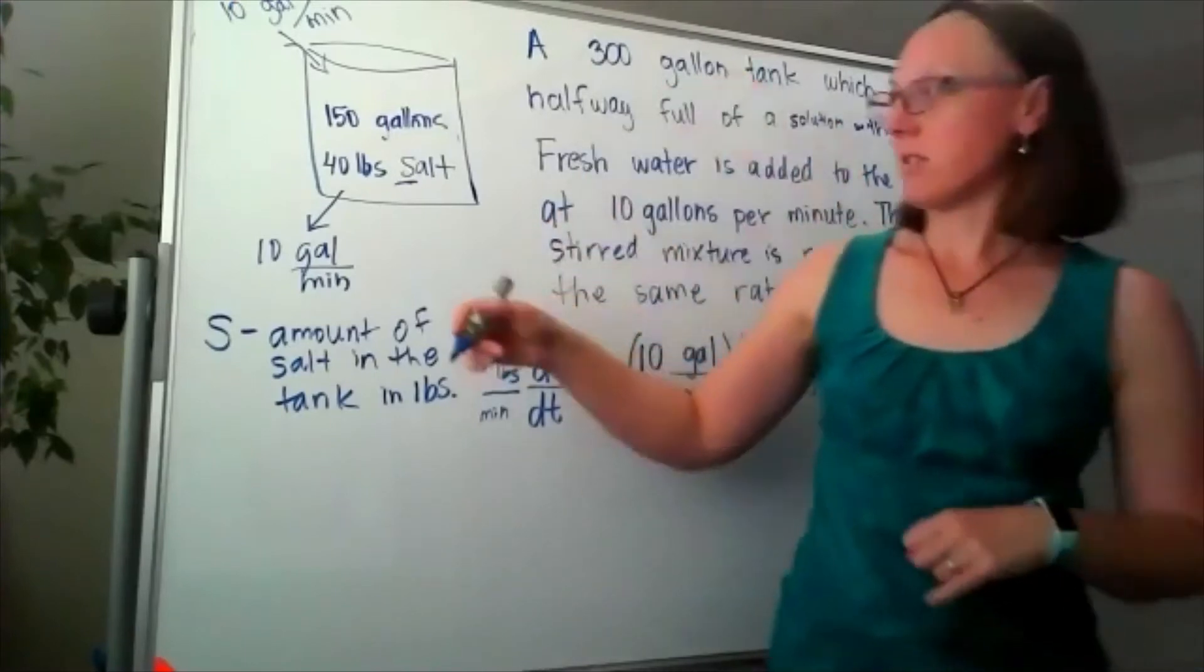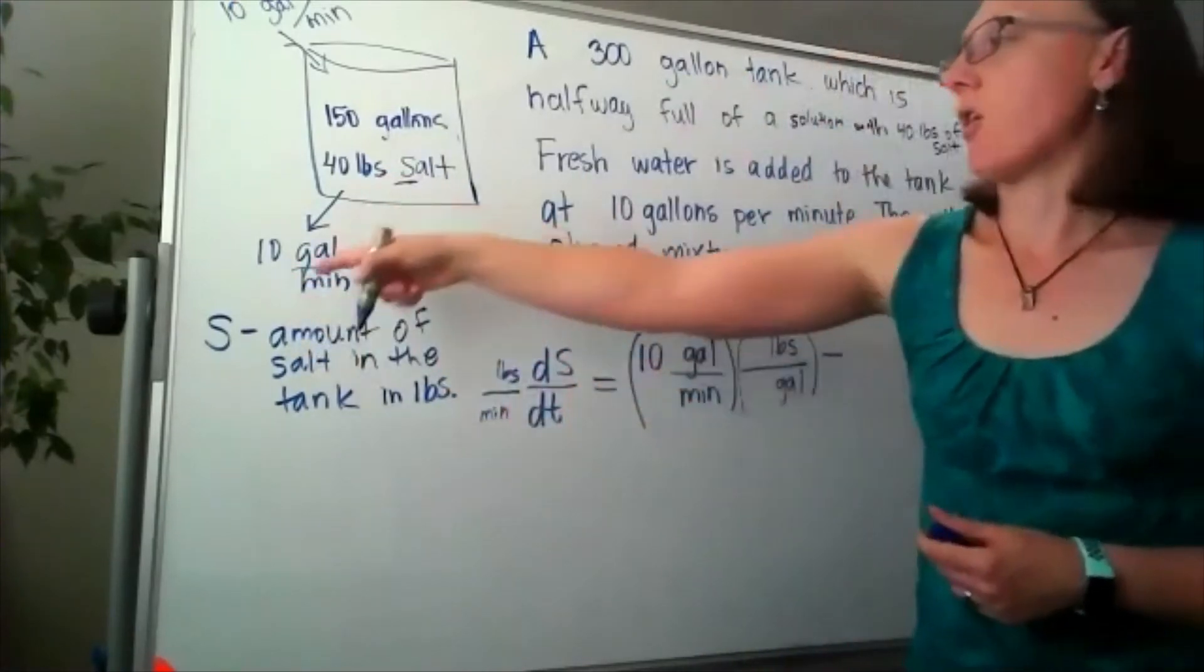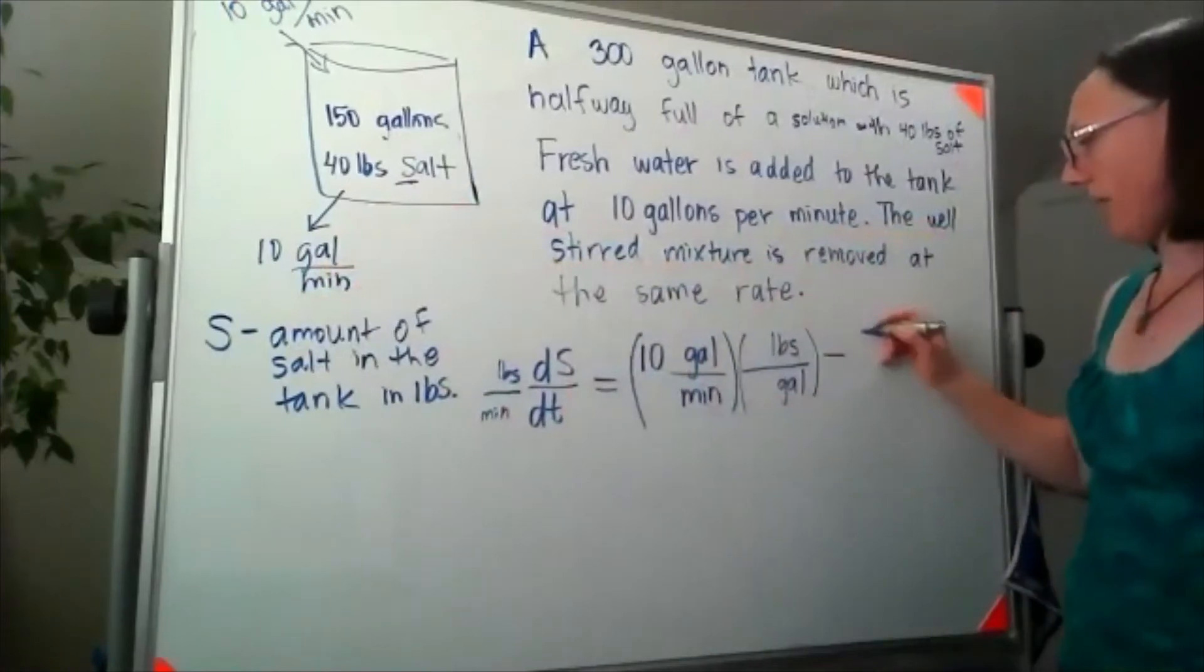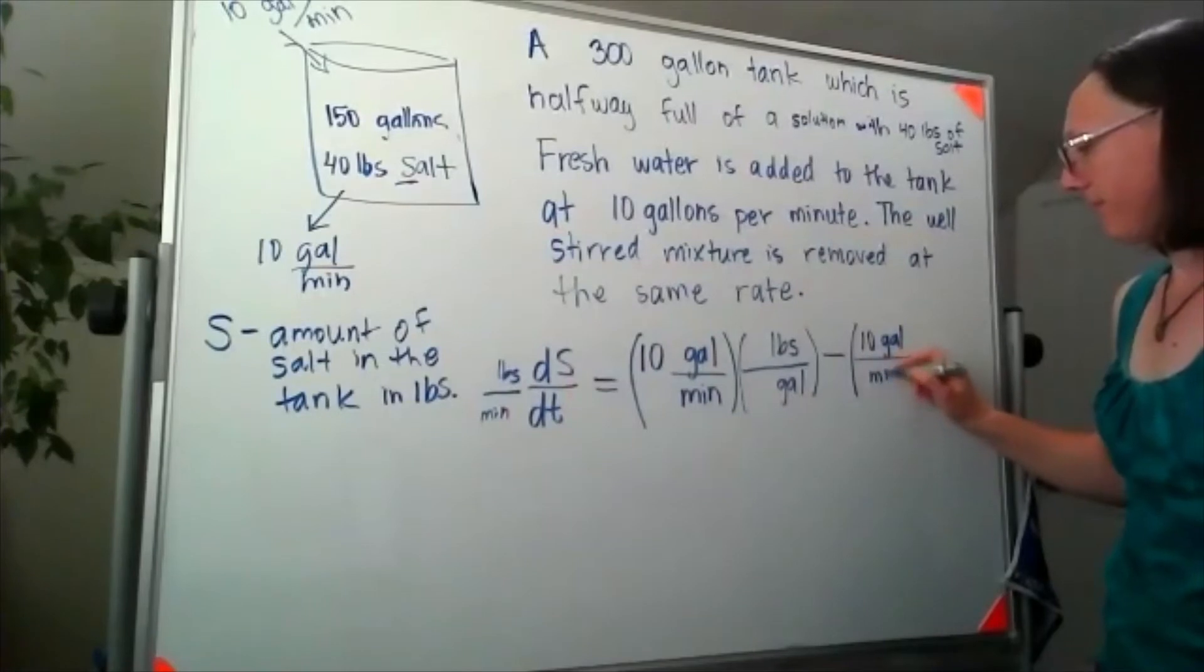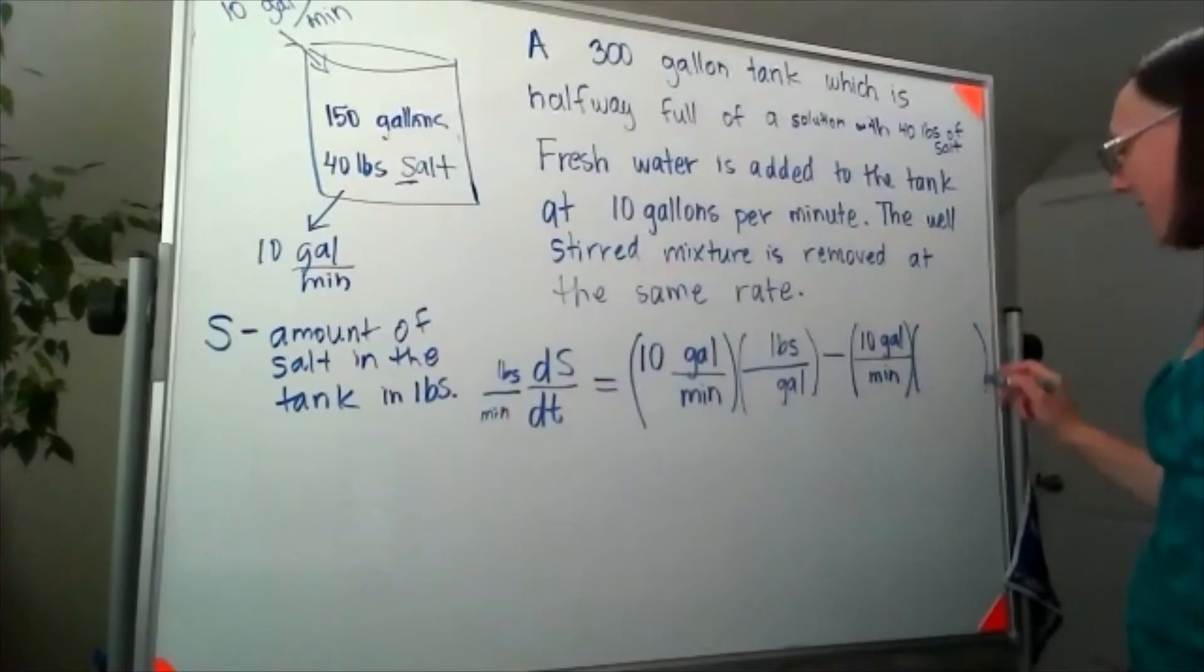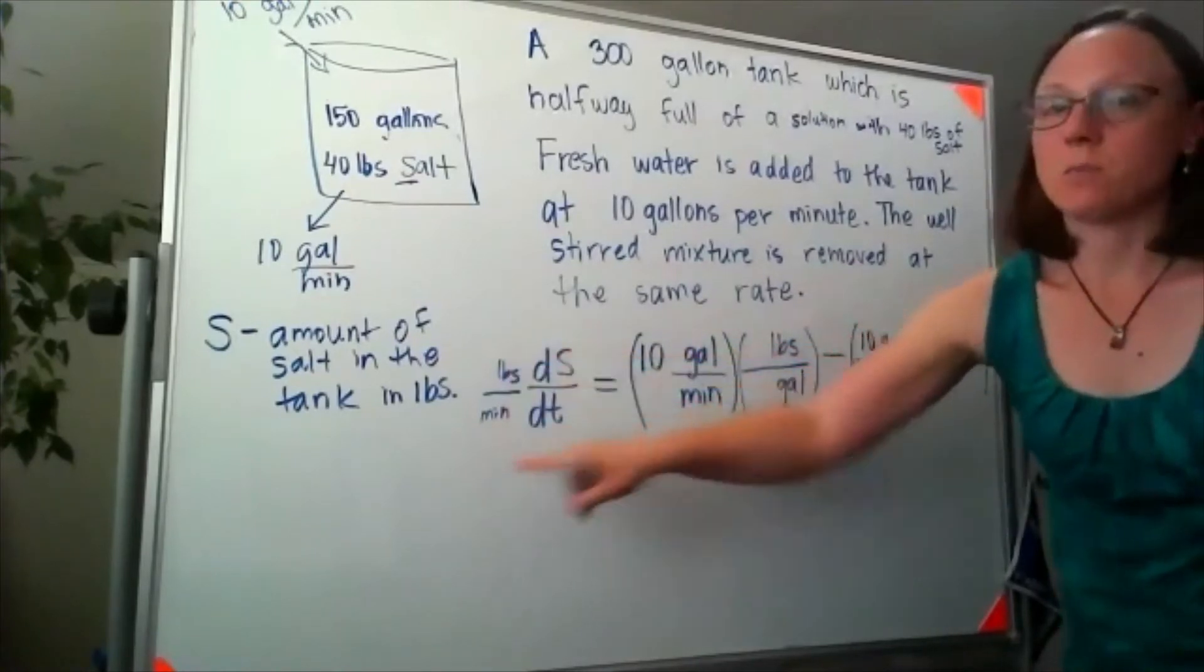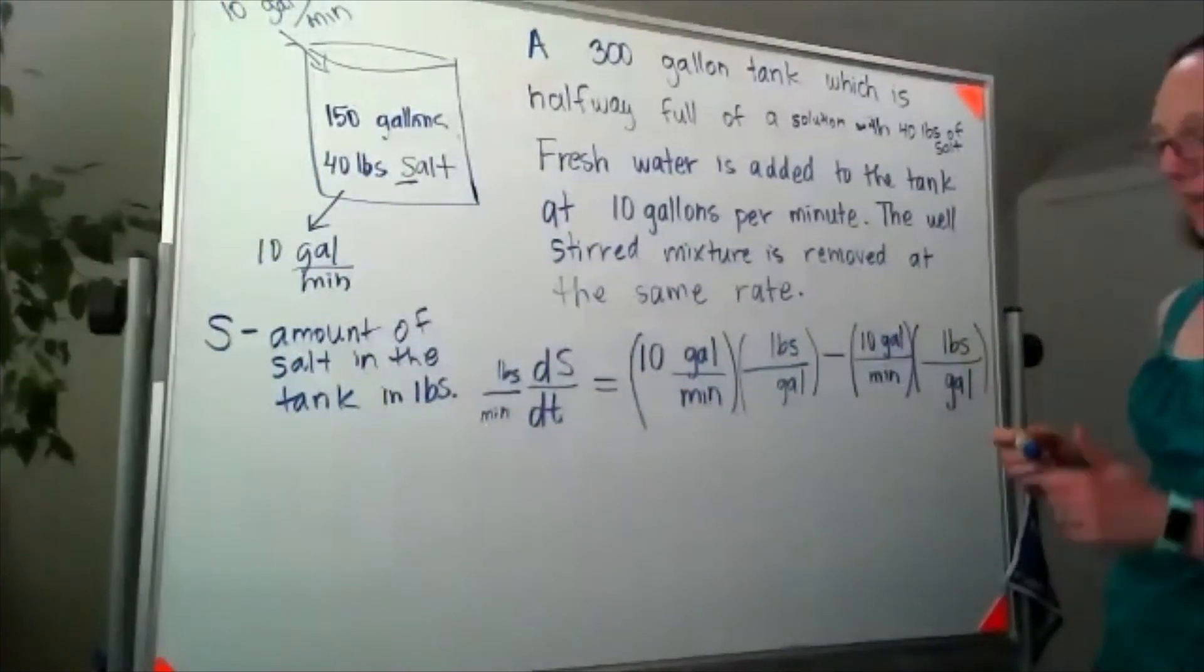Let's deal with what's going out. Well, what's going out—because it's leaving at the same rate—is also leaving at 10 gallons per minute. And I'm going to have the same unit problem over here where I've got gallons per minute, but what I actually need are pounds per minute. So I'm going to need something with units of pounds per gallon.